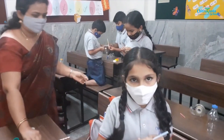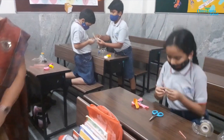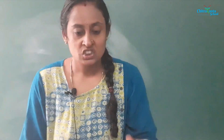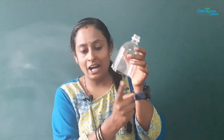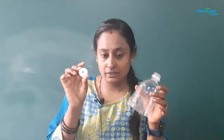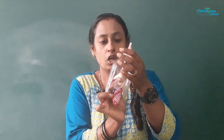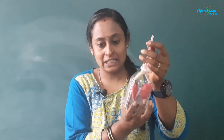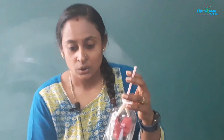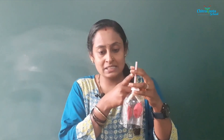All of you take the bottle — take the half bottle, which is cut, along with the cap which has a single hole in it. We will insert this into the bottle like this. We will insert this straw, this side of the straw, inside the cap.